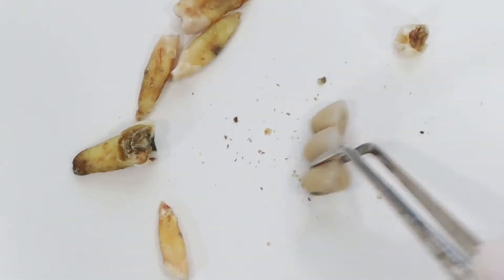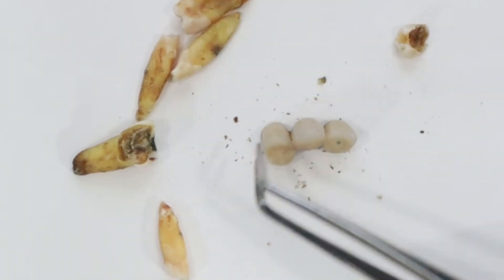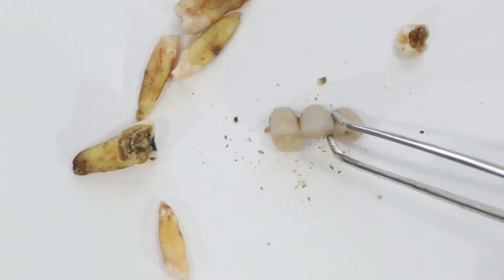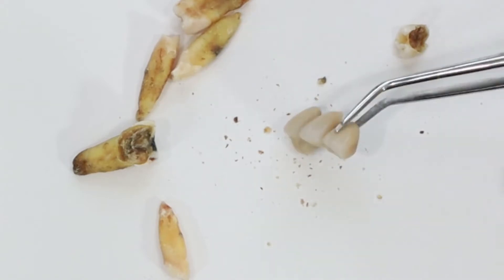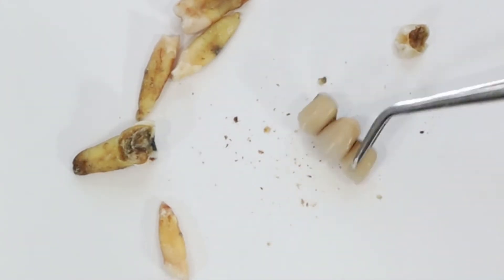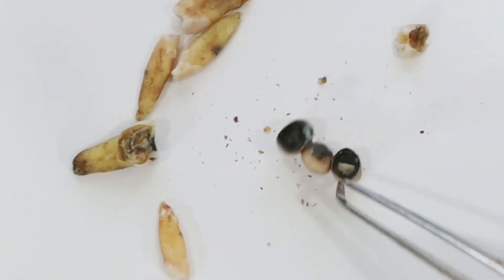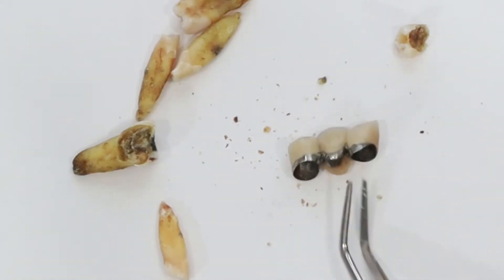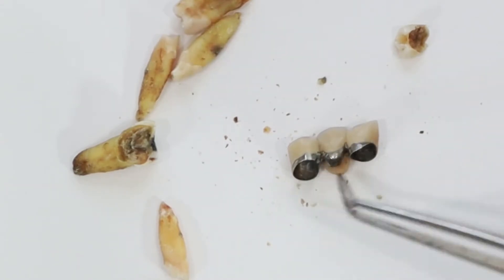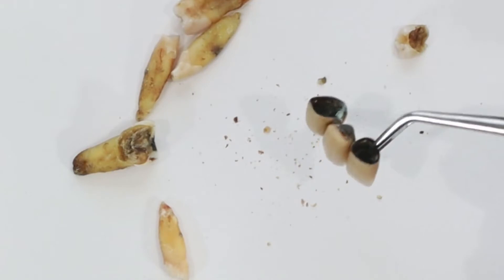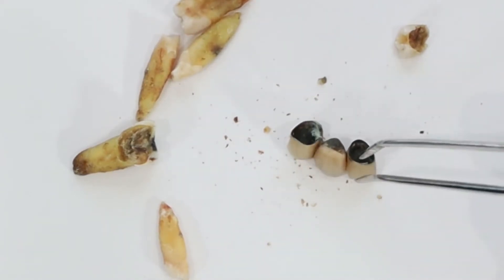So this was a bridge that looks like it's a premolar to a lateral incisor and it was replacing a canine. That's generally not what you want to do if you're missing a canine. You don't want to replace it with a fixed bridge like this. Usually canines if you replace them you want to replace them either with an implant or something removable. Just because of the way the forces are directed these types of bridges tend to fail sooner rather than later.